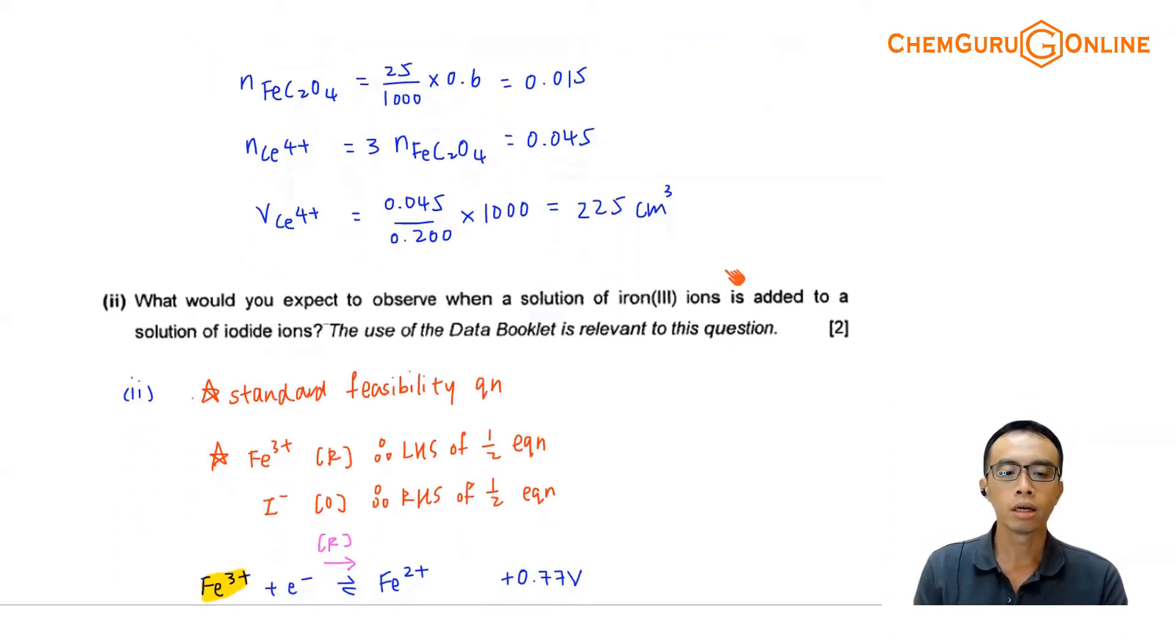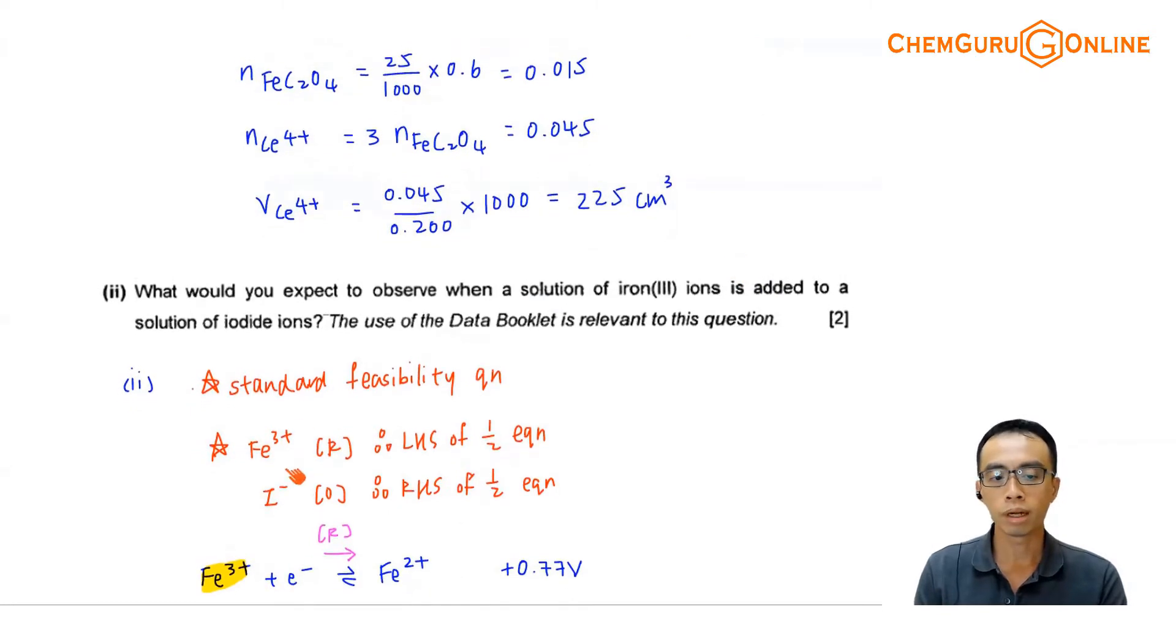I only need to compare the iron 3 plus and iodine minus. So, iron 3 plus and iodine minus, if you put them together, it is quite easy to deduce. I know that iron 3 plus will be reduced to iron 2 plus, iodine minus will be oxidized to I2. So, I can easily choose the relevant half equation from the data booklet.